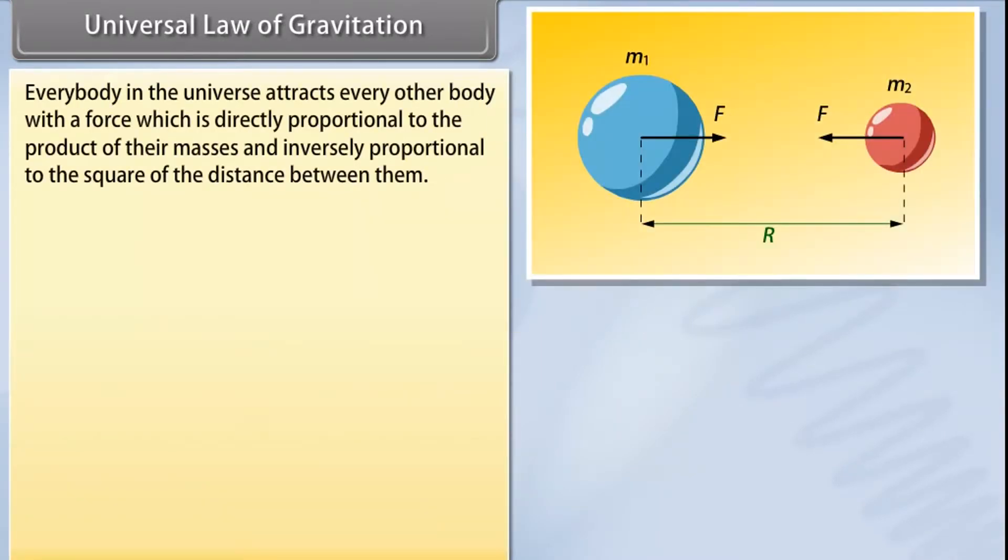Universal Law of Gravitation. Everybody in the universe attracts every other body with a force which is directly proportional to the product of their masses and inversely proportional to the square of the distance between them.